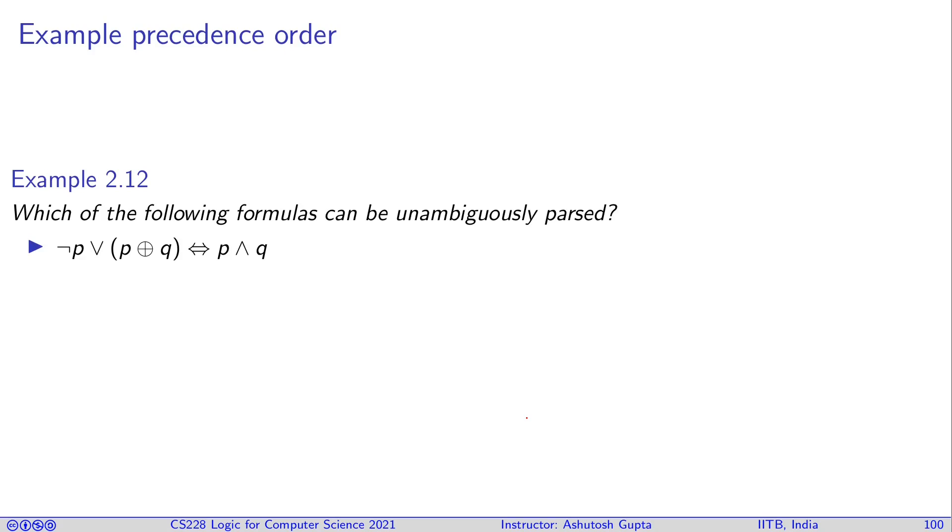So you can easily see which of these formulas can be unambiguously parsed. For example, here you have R and binary implication, and then a conjunction. You can parse this. There's no confusion. Look at the next one. We have R and AND next to each other. Remember that in our precedence order, there is no preference between AND and OR, so you cannot really parse this thing.